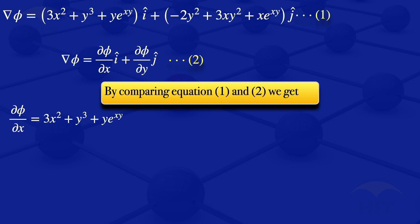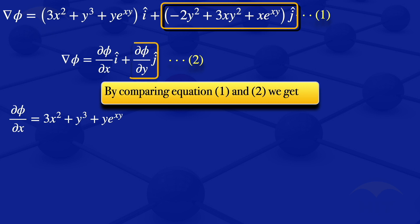Looking at the j-component, by comparison we get: the partial derivative of φ with respect to y equals −2y² + 3xy² + x·e^(xy).